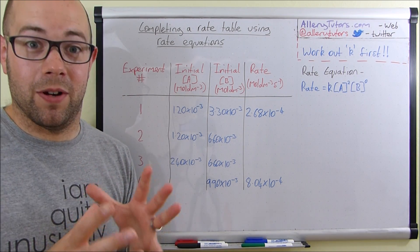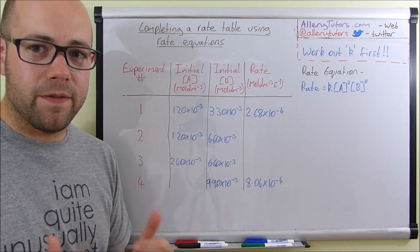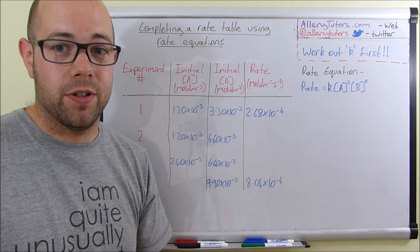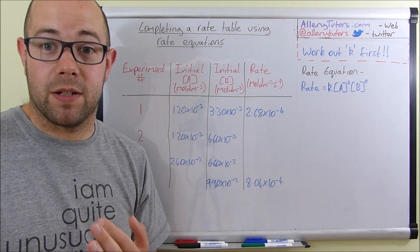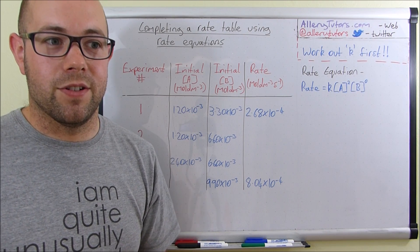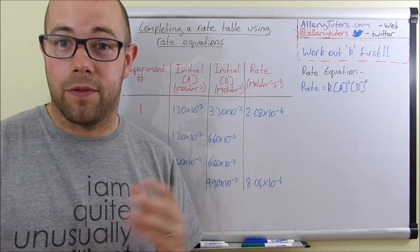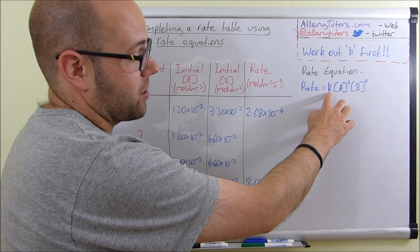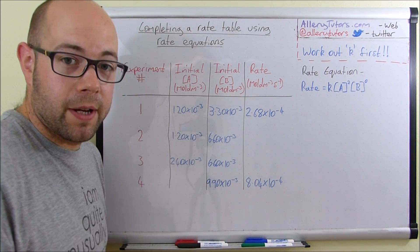Examiners aren't going to make it that easy, so they leave blank spaces. The first thing we need to do is work out k, and before that we need our rate expression. The rate expression tells us the order with respect to each reagent. You'd be given this or would have worked it out in a prior question — you can't deduce the order just from the equation itself. Our rate expression is: rate = k[A]², so it's second order with respect to A and zero order with respect to B.